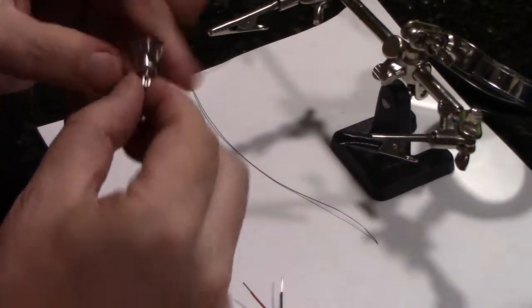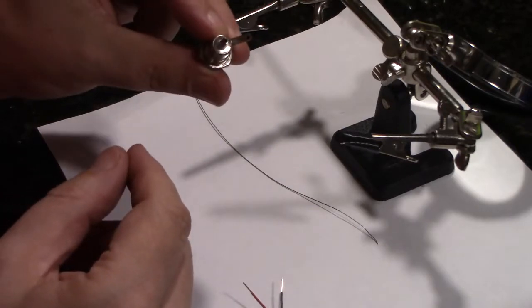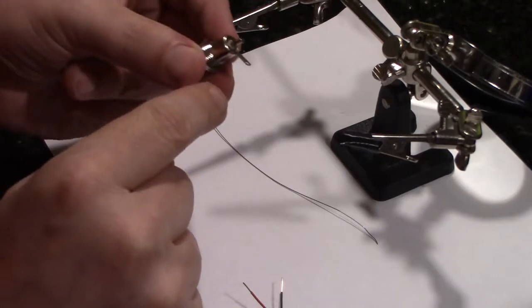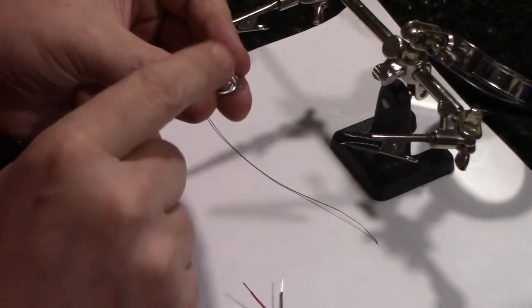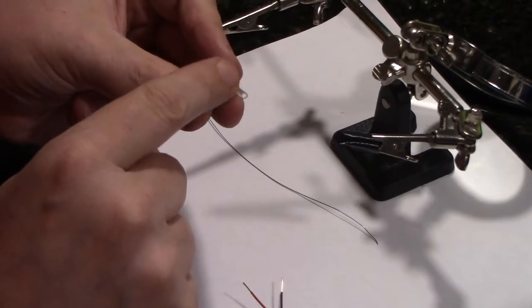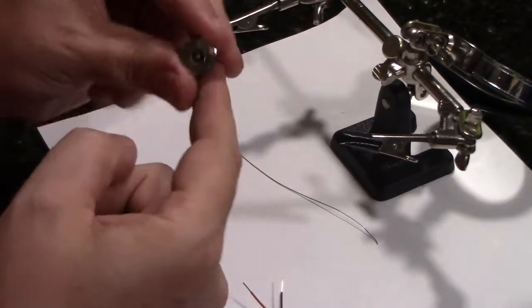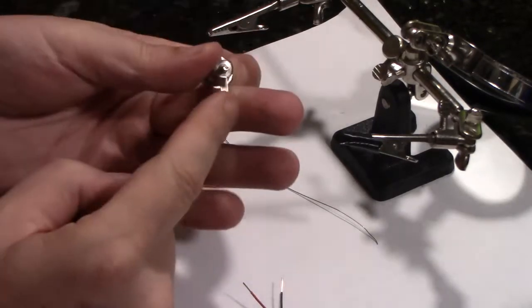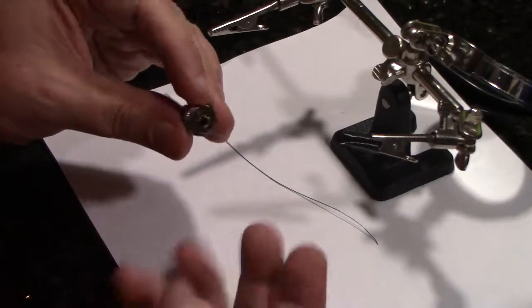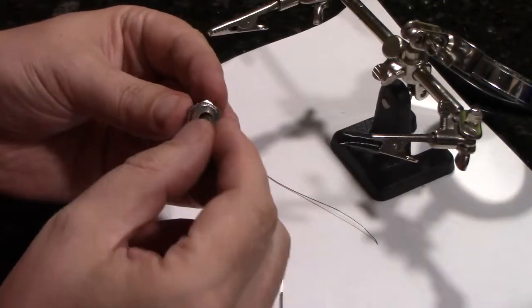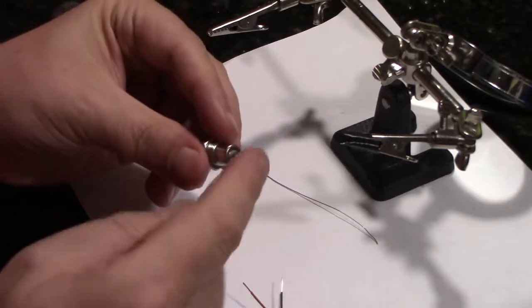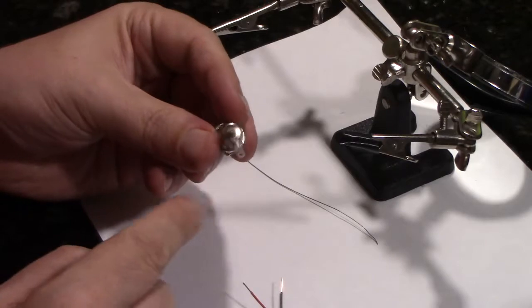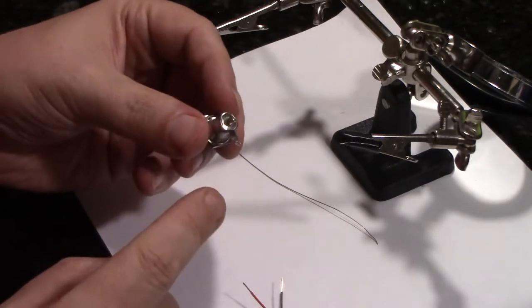The connector has two places to solder: this center pin and the outside. I looked it up—there is no standard about whether you connect the positive voltage to the center or to the outside. This goes to the center pin inside the barrel connector, and this connects to the outside, so you have one positive and one negative terminal. I decided to put the positive in the center for all of these. It doesn't matter which one you pick as long as you're consistent.